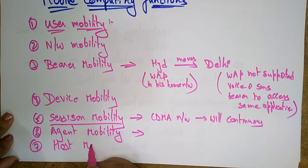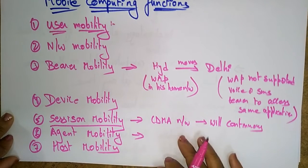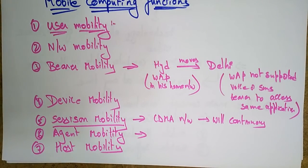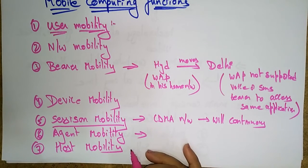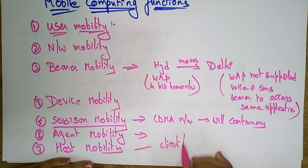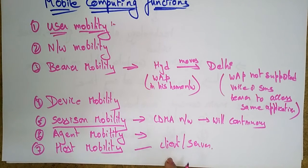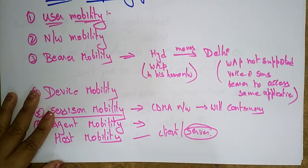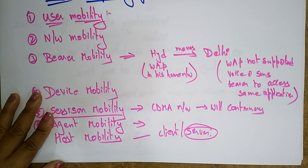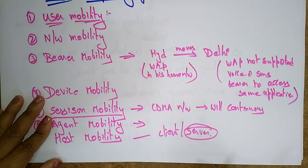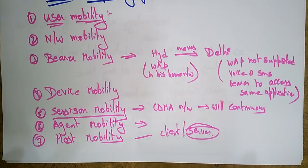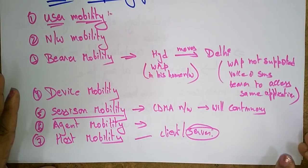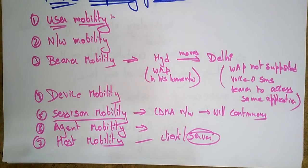The last function is host mobility. In host mobility, the user device can be either a client or a server. When your mobile is acting as a server, some complexities change. In case of host mobility, the mobile IP needs to be taken care of — when your mobile is acting as a host, your mobile IP should be kept secure.